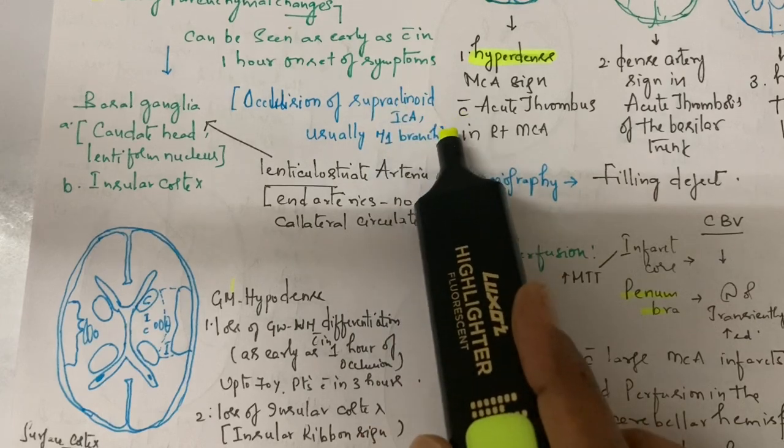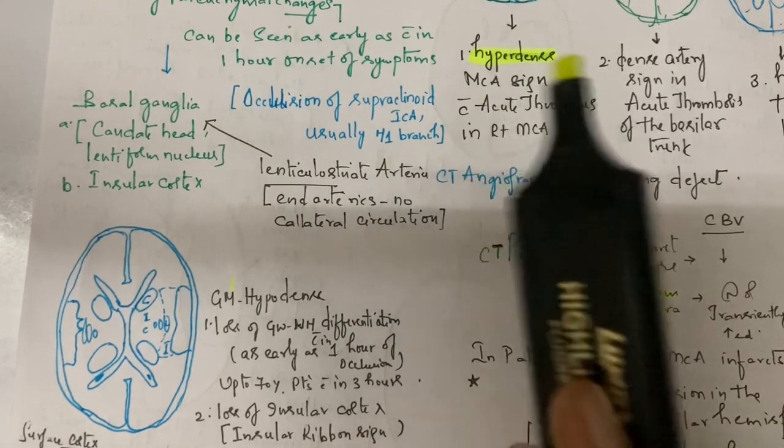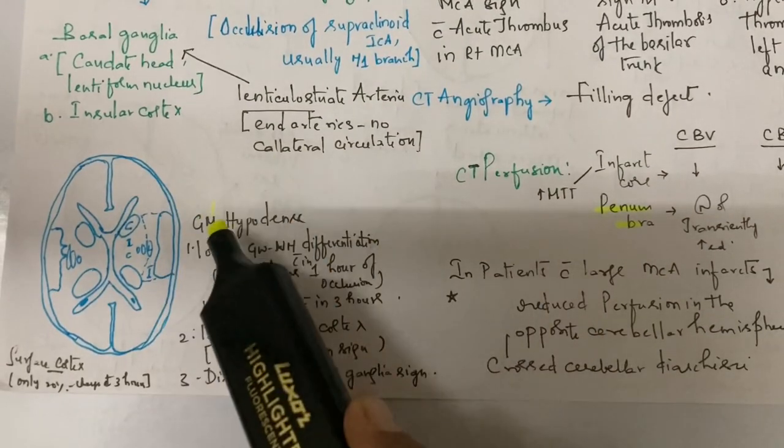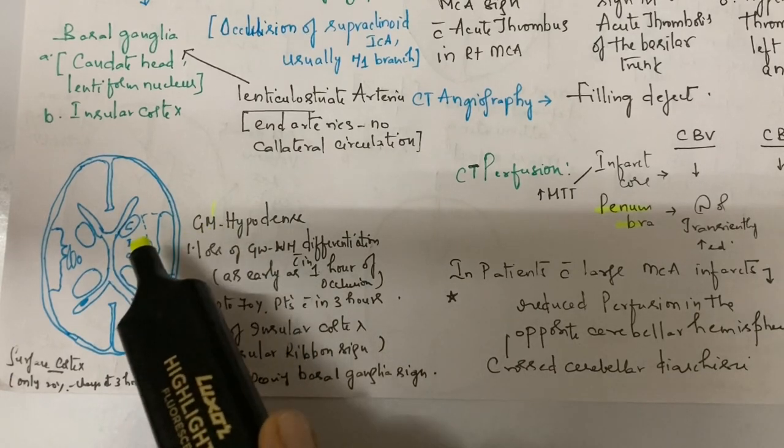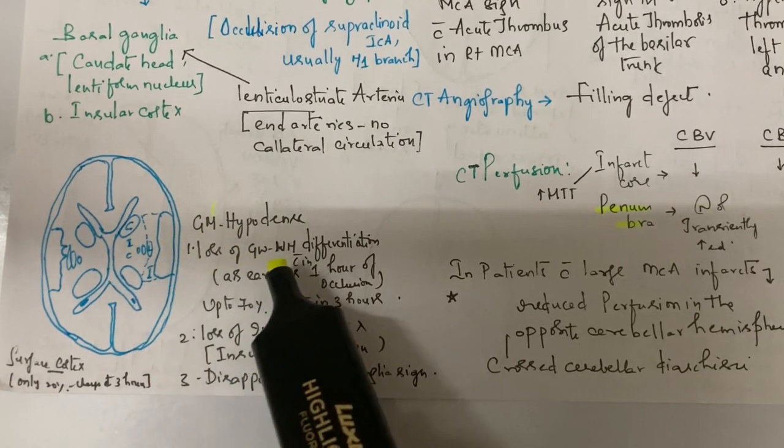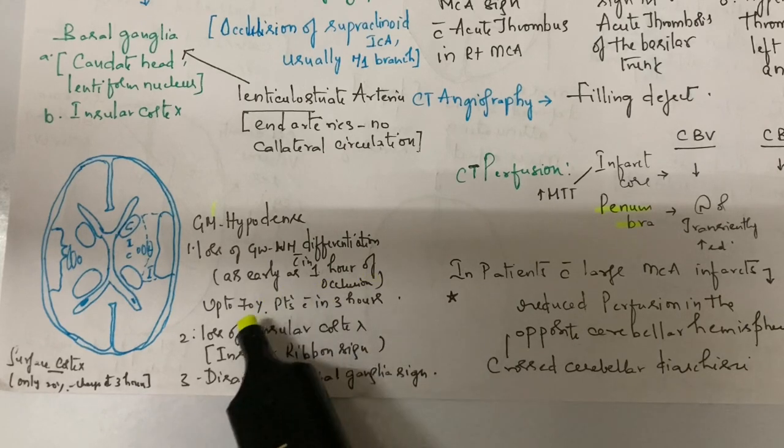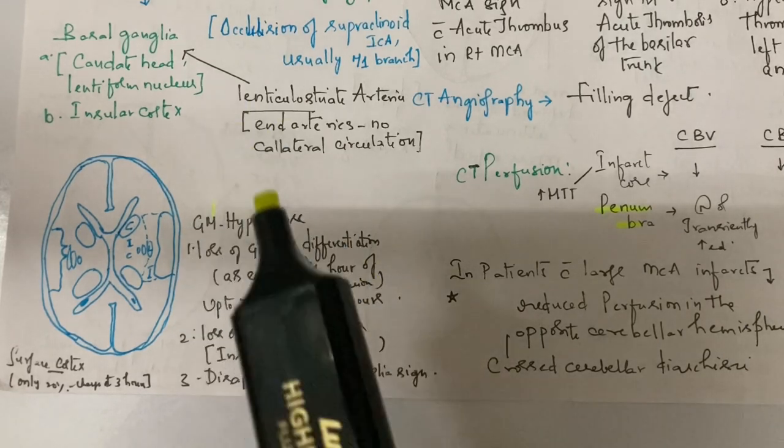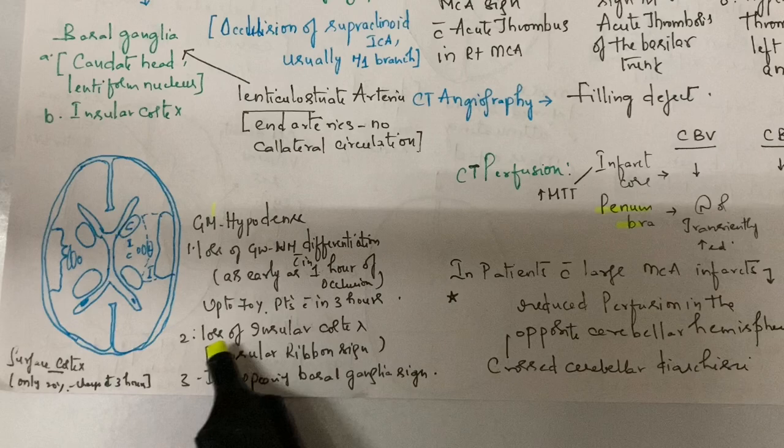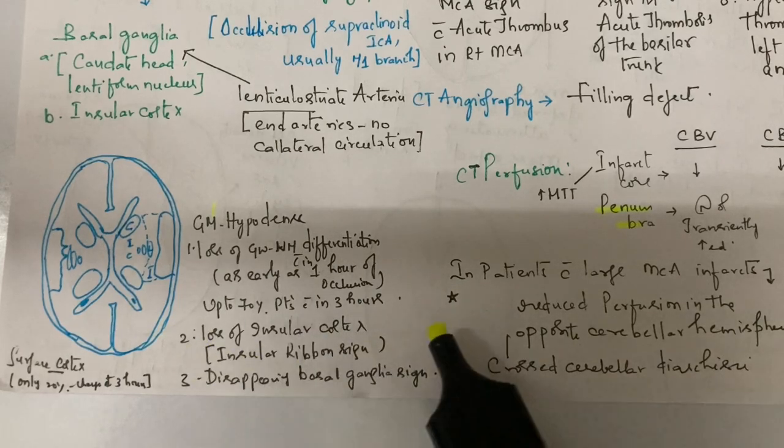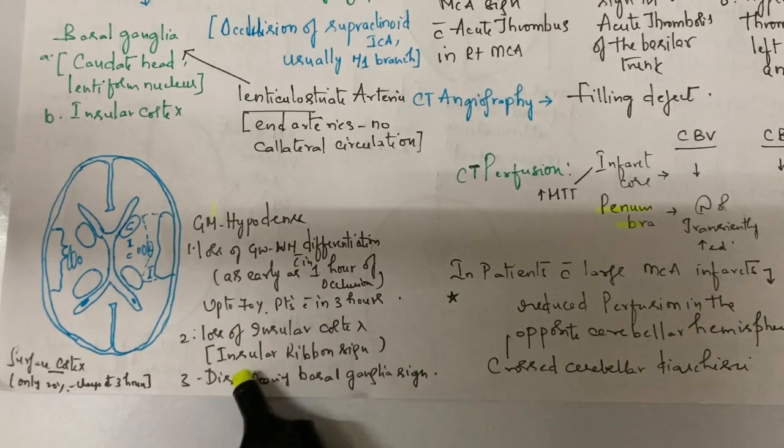What are the parenchymal changes? Gray matter becomes hypodense with loss of gray-white matter differentiation. This is as early as one hour in up to 70% of patients. Within three hours we can see these early parenchymal changes, loss of insular cortex called insular ribbon sign, and disappearing basal ganglia sign.